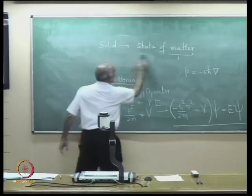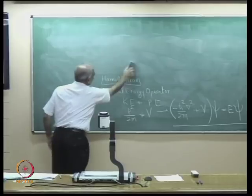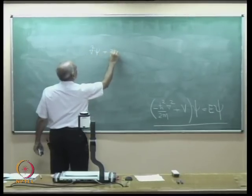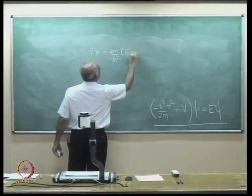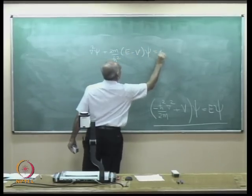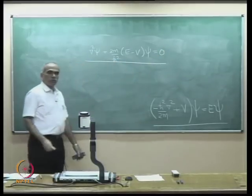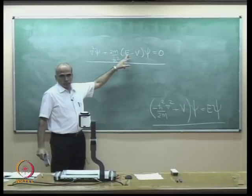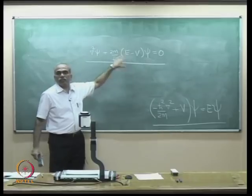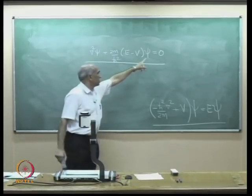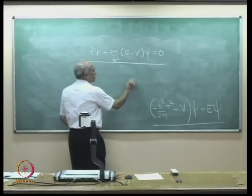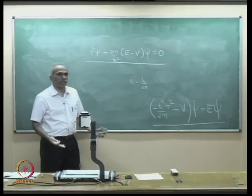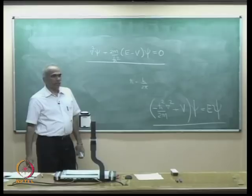You can rewrite it in the form: ∇²ψ + (2m/ℏ²)(E − V)ψ = 0. For every given potential variation V, you can find out an energy eigenvalue, which gives the energy of the particle under consideration. Here ψ is the wave function, ℏ = h/2π, and m is the mass of the electron.